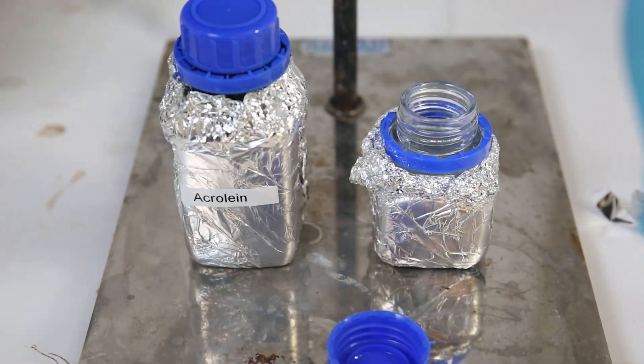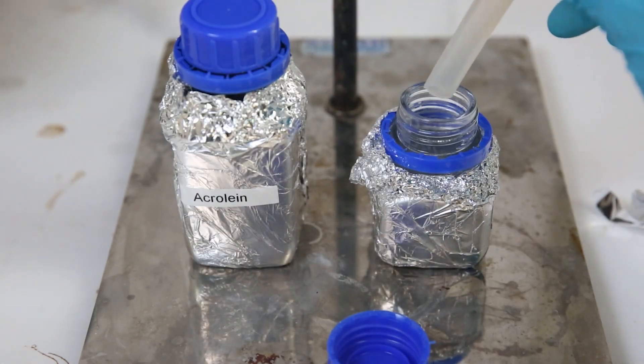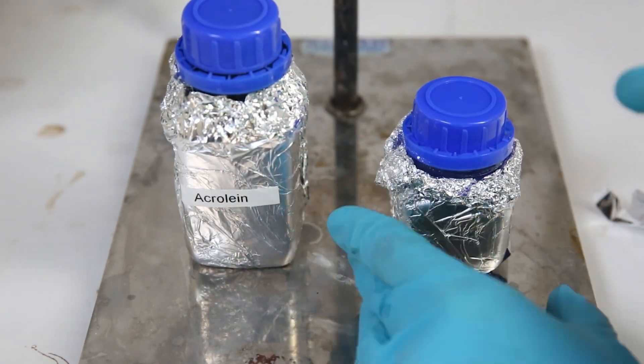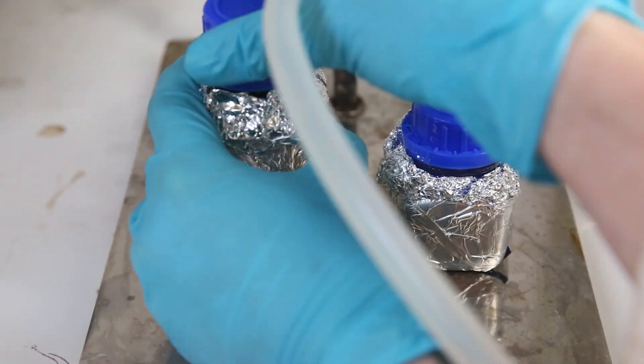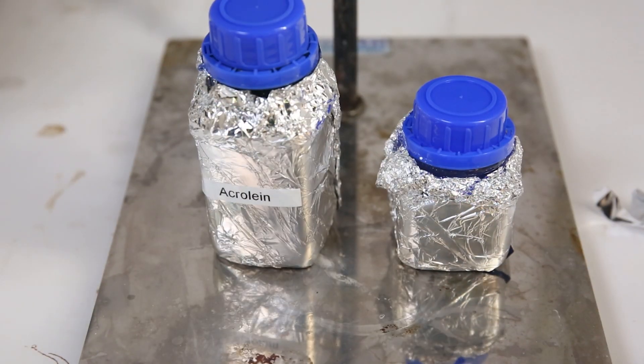For storage, I wrapped both bottles in aluminum foil and then I flushed them with some argon. And I will store both of them in the fridge. And hopefully they won't polymerize before I will use them. In one of my next videos I will use Acrolein to do a Grignard reaction.